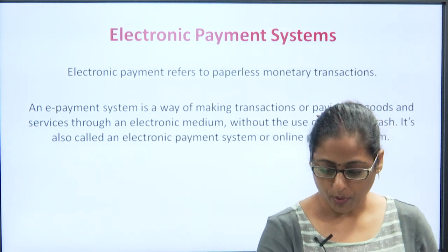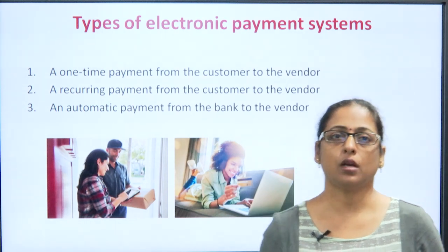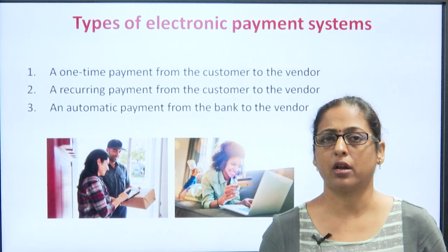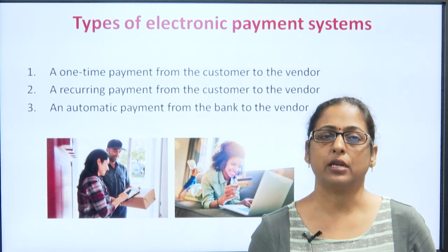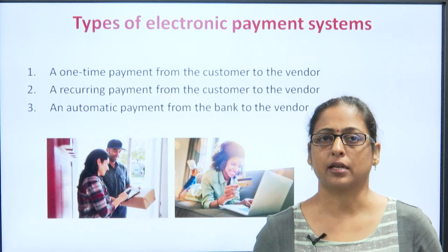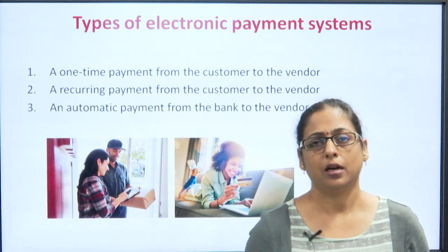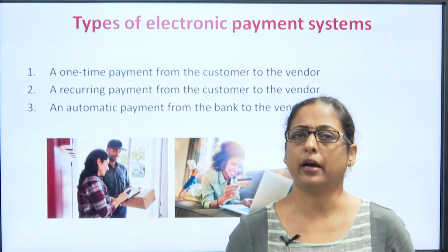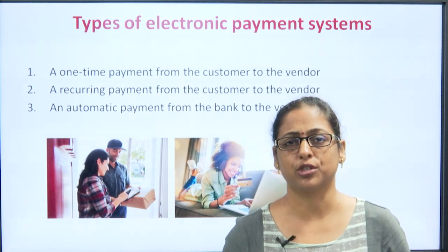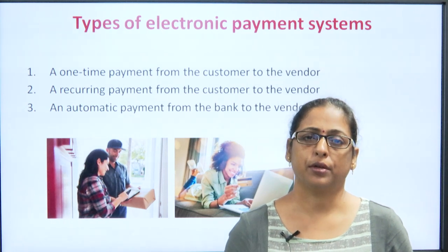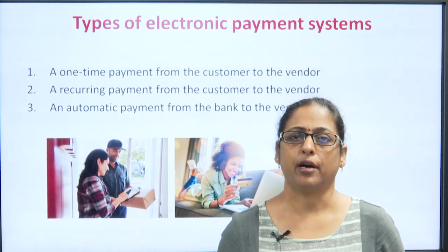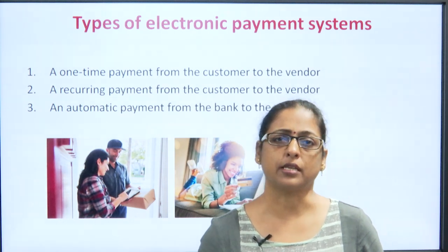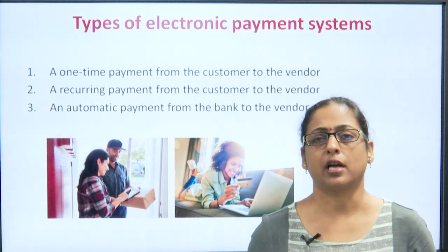E-payment system is basically a way of making transactions or doing payments for goods and services on the electronic medium. These can be done through various methods which have evolved over a period of time and are also called as Internet Payment System or Online Payment System. There are basically three types of electronic payment systems. The first being the one-time payment system where the customer pays the vendor or seller of the good in one go — meaning you order a product online and pay the vendor one time, after which the transaction completely closes once you have received the good.